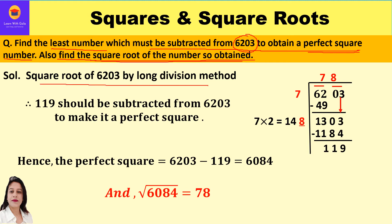Let's find the square root of 6203 by long division method. We start by forming pairs from the ones digit: first pair is 03, second pair is 62. These pairs are also called periods. We take the first period, 62, and think of the largest number whose square is either equal to or less than 62. Trying 7: 7×7=49, and 8×8=64 which is more than 62. So we keep 7 as divisor and quotient. 7×7=49, and 62−49=13. We bring down the next period 03, giving new dividend 1303.